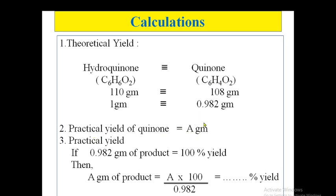You have to write the practical yield of quinone, whatever weight you are getting. Then practical percentage yield is calculated by this formula. If 0.982 grams of product equals 100% yield, then whatever grams you are getting, that equals a times 100 divided by 0.982 grams. Whatever answer you get, that is the percentage practical yield of quinone.